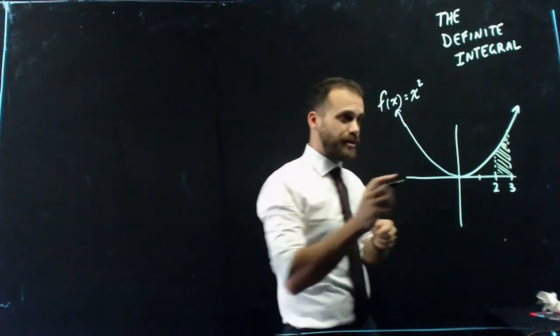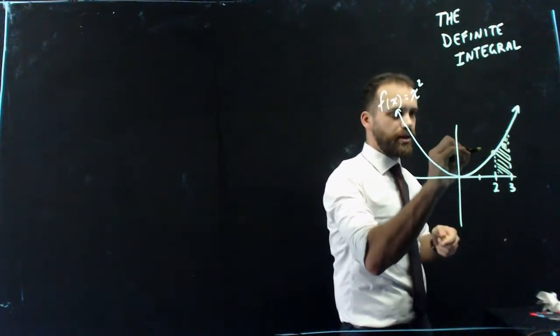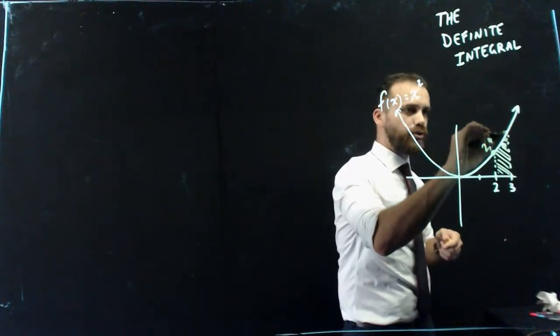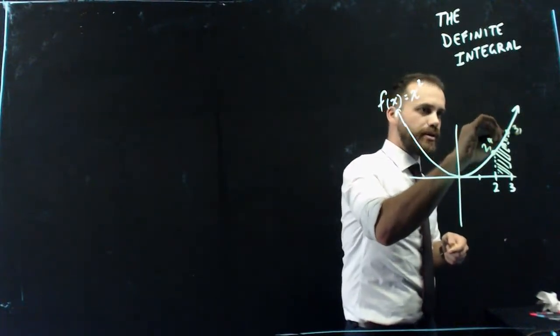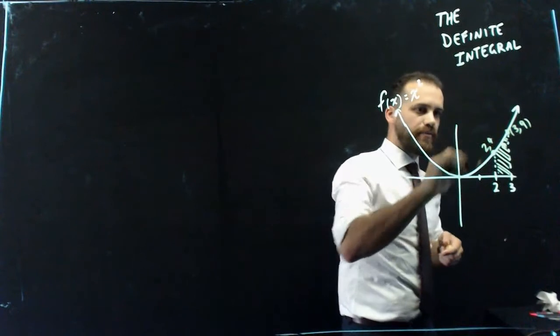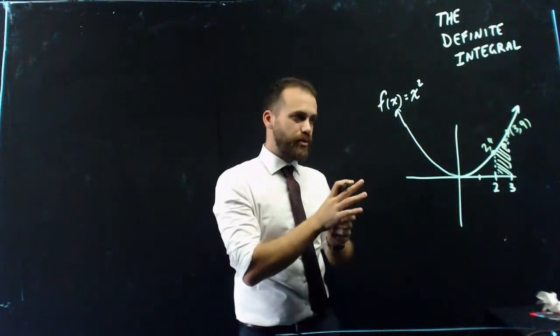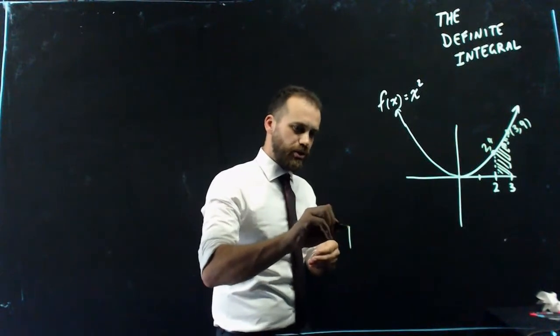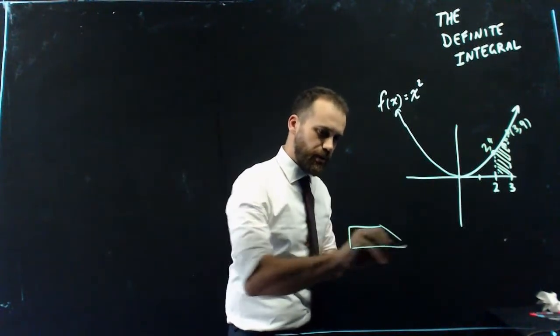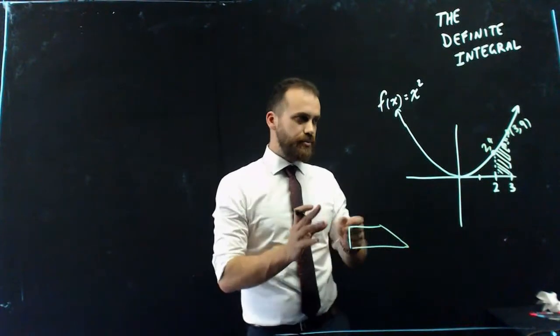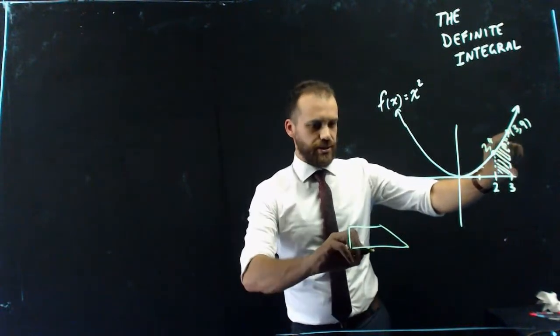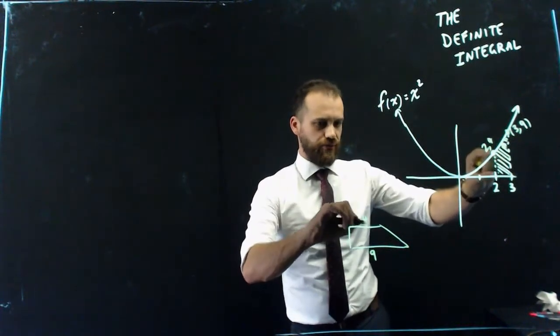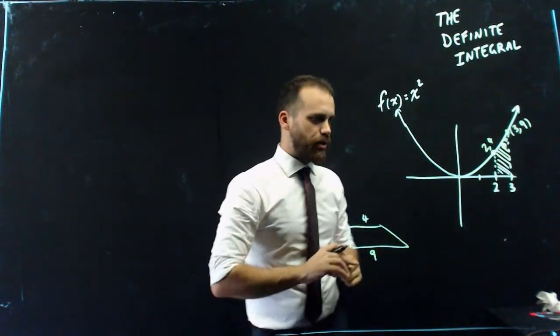Now, we can guesstimate it because I know that that point there is 2, 4, and I know that that point there is 3, 9. And so what I end up with is, two ways you can think about it, but I'm going to turn it on its side and turn it into a trapezium. The base is 9, that's 4. It's 1 high.